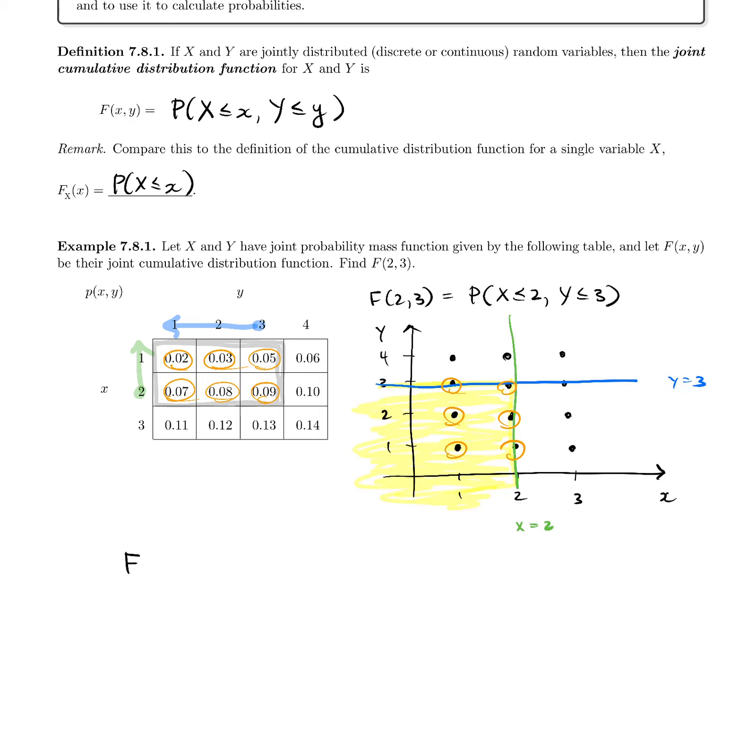If we're going to write this formally, then F(2,3) is the sum from i equals 1 to 2, those are the X values, the sum from j equals 1 to 3 of p(i,j). Which means we're going to add up p(1,1) plus p(1,2) plus all the way up to the last value here, which is p(2,3). In other words, we're adding 0.02 plus 0.03 plus all the way through this table until we get to that last value of 0.09. And if you add all of those up, you should get 0.34.